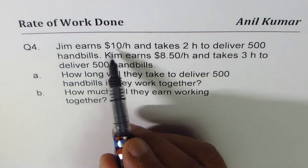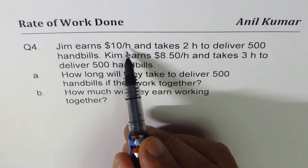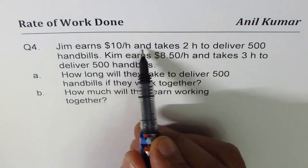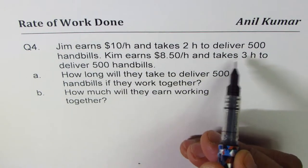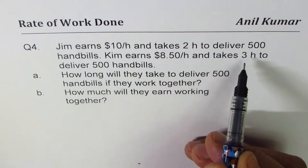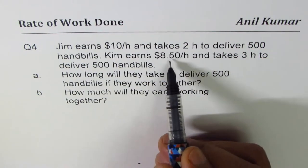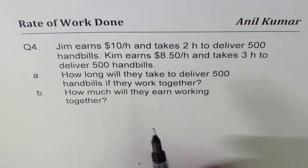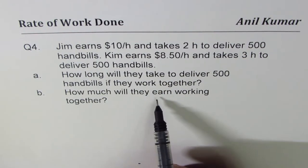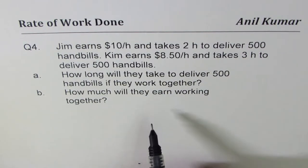Working alone, so many dollars per hour times two. So $20 for Jim for delivery of 500, and for Kim it is 8.50 times three, more than around $25.50 for Kim working alone. The question is when they work together, how much do they earn? You can always pause the video, answer the question, and then look into my video.